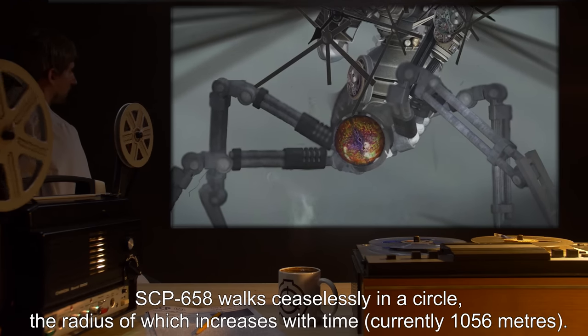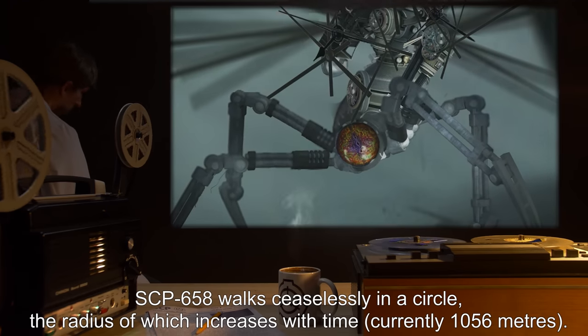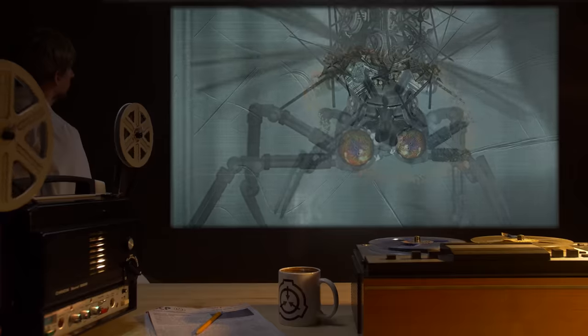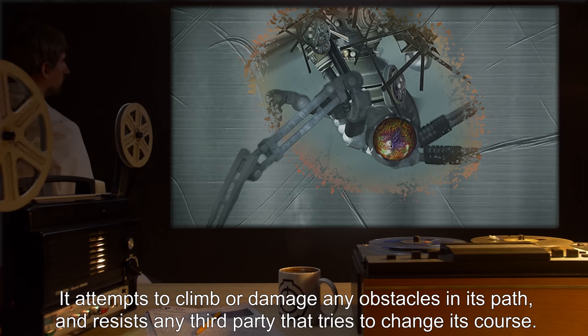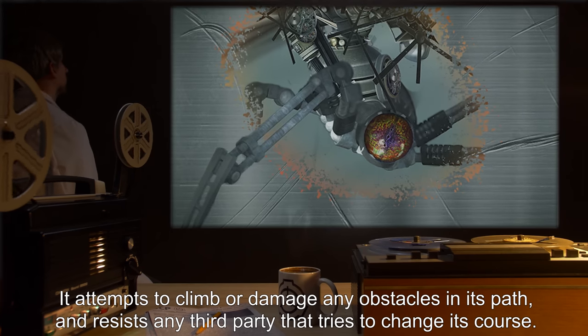SCP-658 walks ceaselessly in a circle, the radius of which increases with time, currently 1,056 meters. It attempts to climb or damage any obstacles in its path, and resists any third party that tries to change its course.